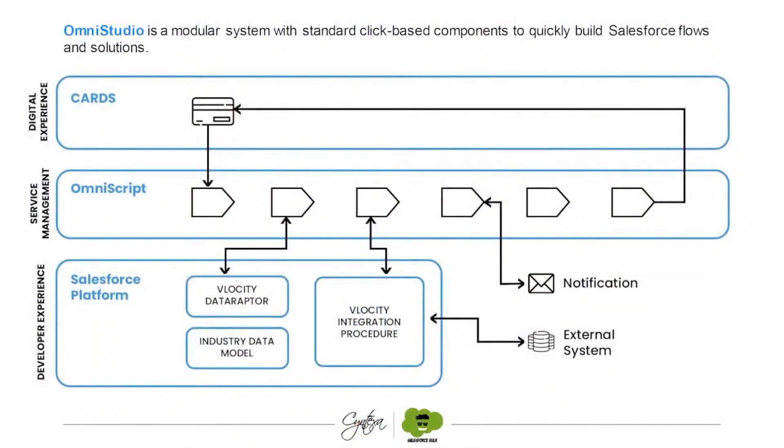Under that app you get all these features like Omni Script, Data Raptors, Integration Procedures, Flex Cards, and Calculation Processes — all the features we discussed. So basically it is an app — Omni Studio. Under that you get all these features which can be used along with each other and are very relatable. That's what Omni Studio is.